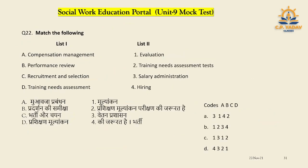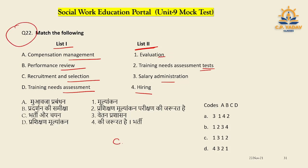Question number twenty-one is the last question. You need to pair List 1 and List 2 — compensation management, performance review, recruitment and selection, and training needs assessment — with descriptions like hiring, training needs test, and evaluation. Please give the answer for question 22 in the comment box, and the correct answer will be pinned.